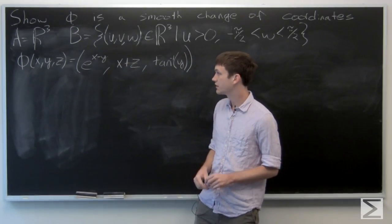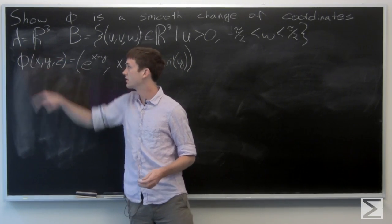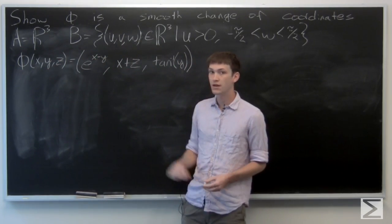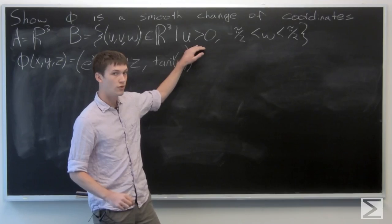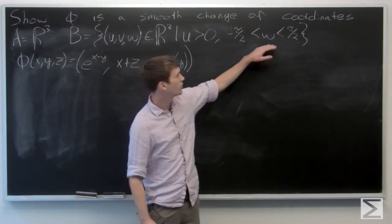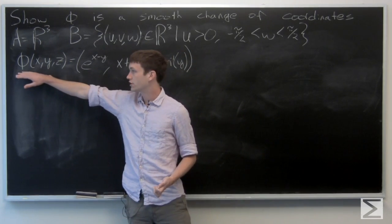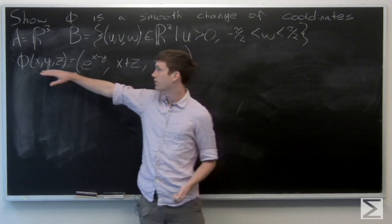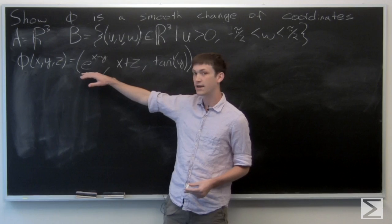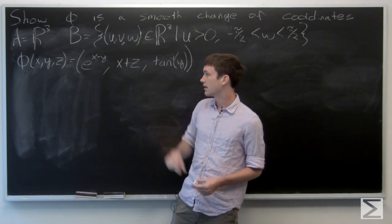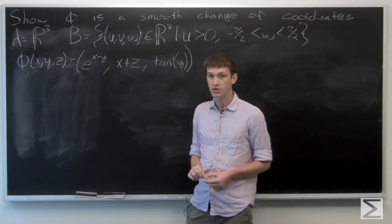In this problem we're asked to show that phi is a smooth change of coordinates. Our domain is R³ and our codomain is the set of points u, v, w in R³ such that u is greater than zero and w is between negative pi halves and pi halves. Our function phi is from R³ to B where the first component is e to the x minus y, the second component is x plus z, and the third component is the inverse tangent of y.